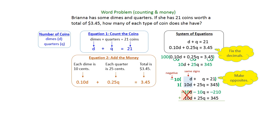Then you're going to add the equations together, and your D's will cancel, which is why we made those opposites. So you're going to have 15Q because negative 10 plus 25 is 15, and then negative 210 plus 345 is 135.